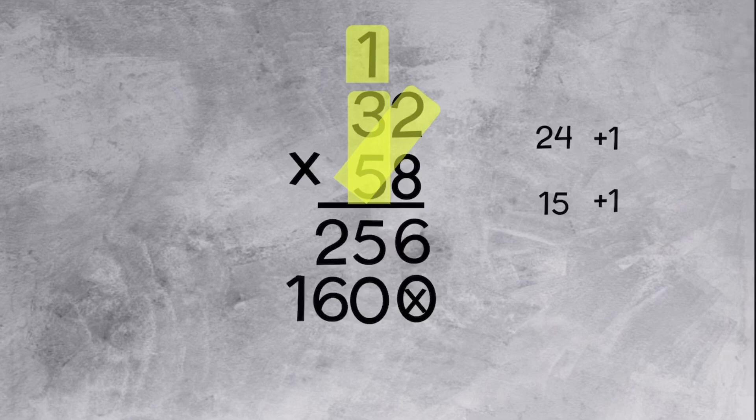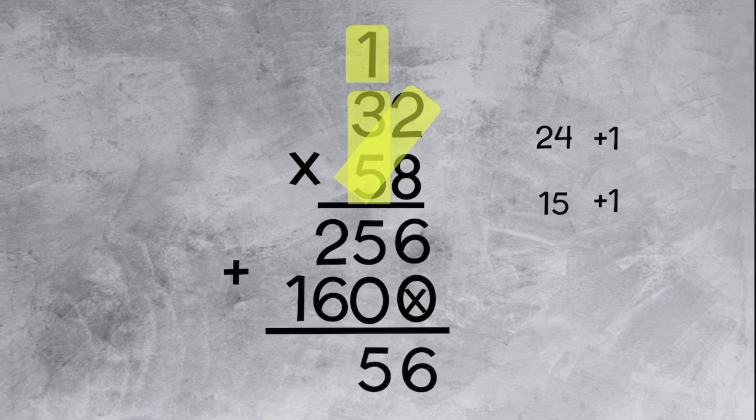Lastly, we will add both of the answers that we got for multiplying the 8 by both digits on the top and the 5 by both digits on the top. We will get 1856.